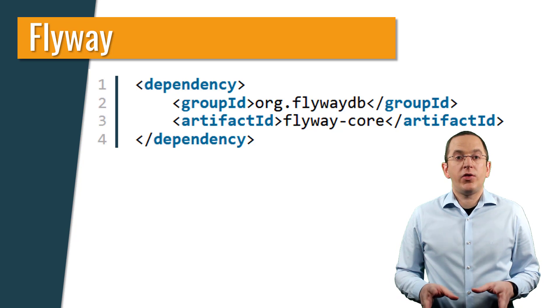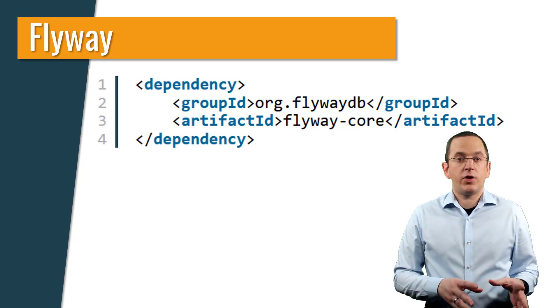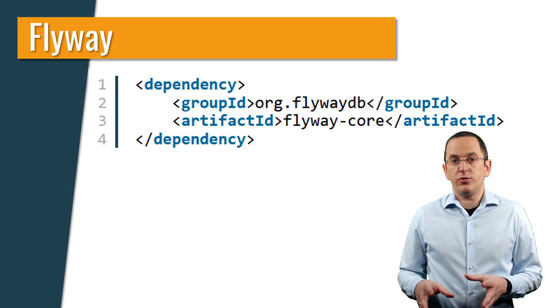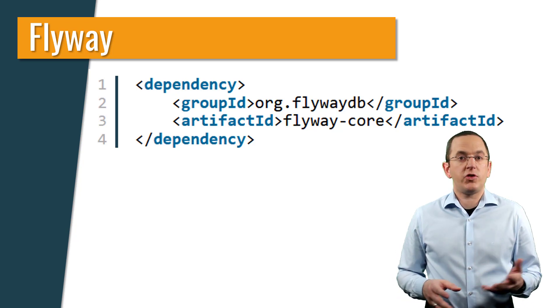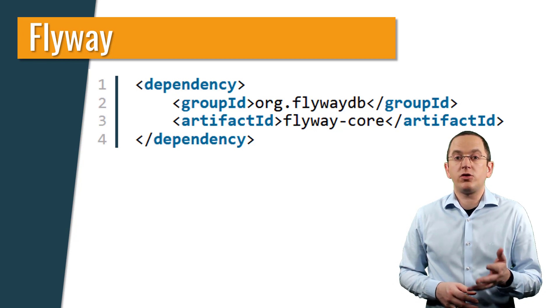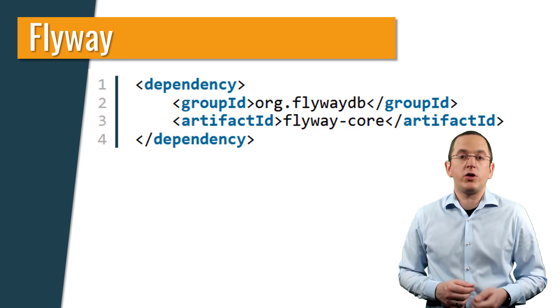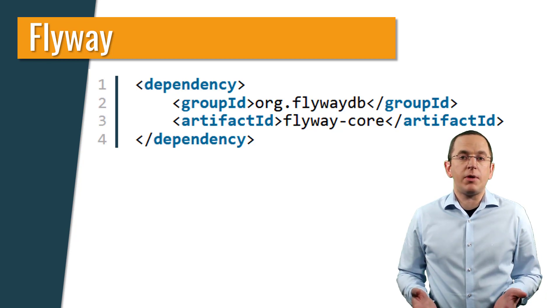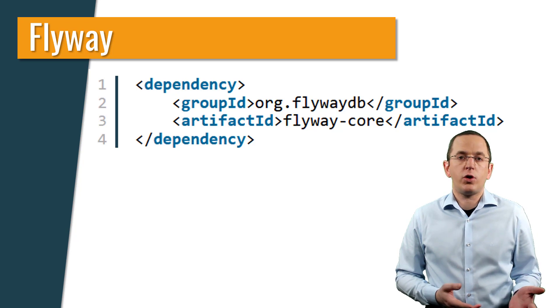Flyway will then use the configured data source to check the current version of your database, scan the directory classpath db/migration for migration steps, and migrate the database to the current version.